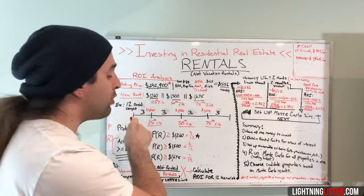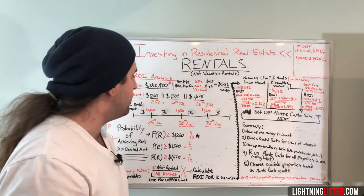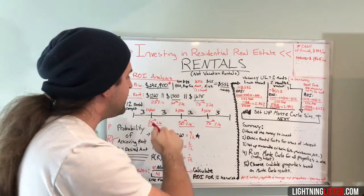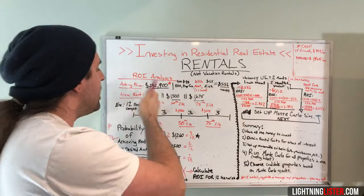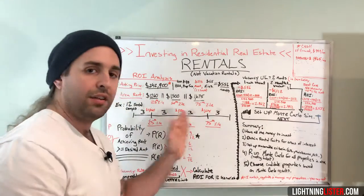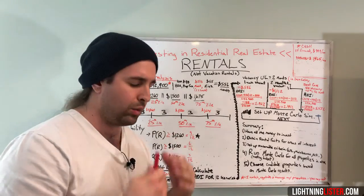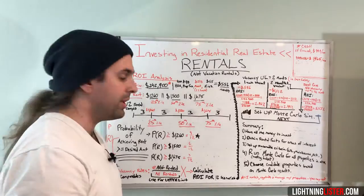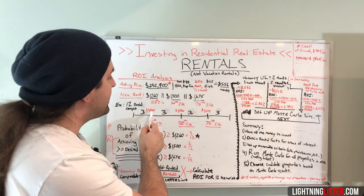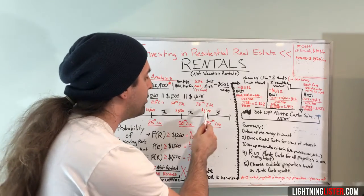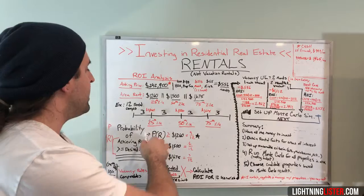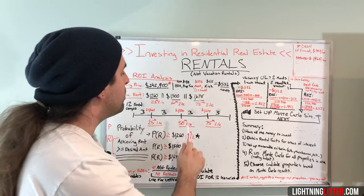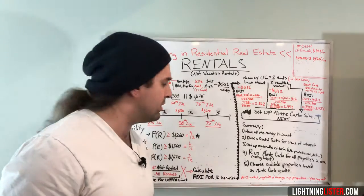In this case, we grabbed 12 rental properties very similar to the property we're looking at and put them into quantile bins, which tell you what number of them are lower or higher than a certain price. Out of the 12 rental properties, three fell at or below $1,260, six fell at or below $1,500, and nine fell at or below $1,675 in rent. So the 25th percentile was $1,260, the 50th was $1,500, and the 75th was $1,675.